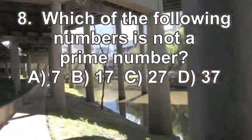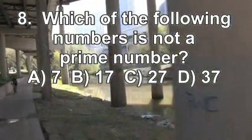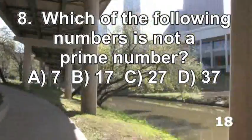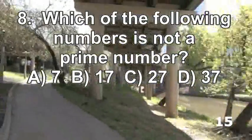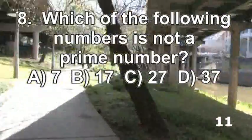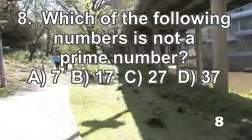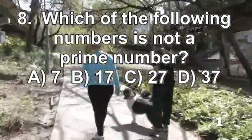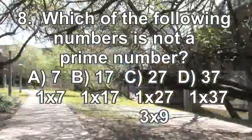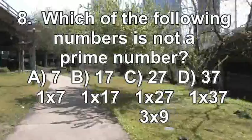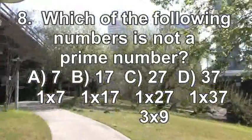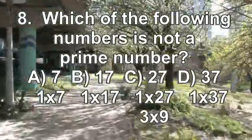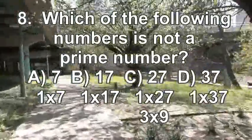Question 8. Which of the following numbers is not a prime number? Is it A: 7, B: 17, C: 27, or D: 37? A prime number has only two factors — the number itself and one. Seven, 17, and 37 are prime numbers. 27 also has three and nine as factors, so 27 is not a prime number — it's a composite number.